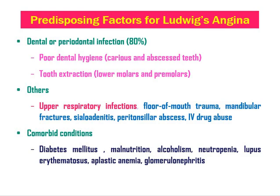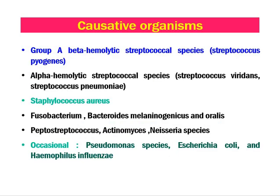The most common causative organism is Group A beta-hemolytic Streptococcus — specifically Streptococcus pyogenes — followed by alpha-hemolytic streptococcal infections like Streptococcus viridans and Streptococcus pneumoniae. Staphylococcus aureus, Fusobacterium, and Bacteroides species such as melanogenicus and oralis may also lead to anaerobic infection of the floor of mouth. Peptostreptococcus, Actinomyces, Neisseria species, Pseudomonas, E. coli, and Haemophilus species may also cause disease. This infection involves both gram-positive and gram-negative anaerobic organisms, making it a polymicrobial infection with foul-smelling pus on incision.